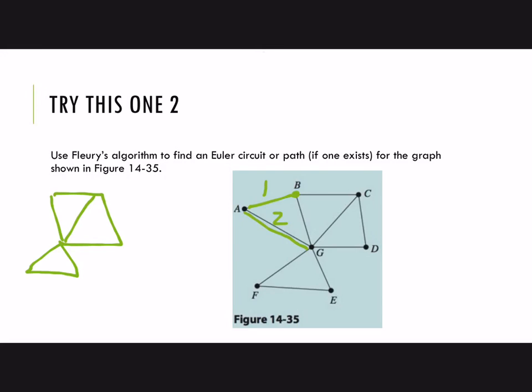So GC, if I erase that, the graph is still connected, so that's not a bridge. GD, I could use that one, everything's still connected. Or GE, that's okay. And GF, that's not a bridge either. So any of these edges would be fine to go ahead and use. So let's continue on. I'll go back to B.